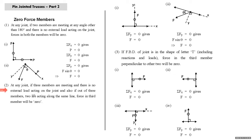Note Number Two: at any joint if three members are meeting, no external load on the joint, and out of the three members two are in one line, force in the third member will be zero. In the FBD shown, two members are along the x-axis and one is along y-axis; sigma Fy = 0 gives F = 0. Even when the two collinear members are inclined and a third member makes angle theta, sigma Fy = 0 gives F sine theta = 0, so F is zero.